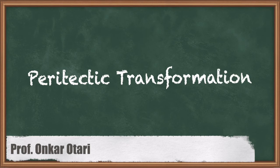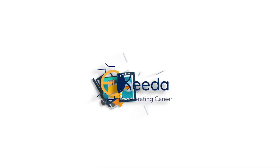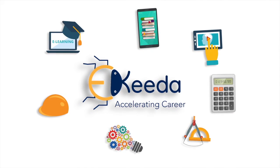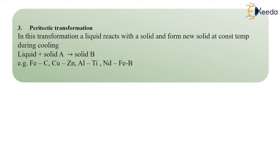Welcome students. In this video we are going to talk about peritectic transformation in a bit of detail. So what is this peritectic reaction? Here liquid reacts with one solid — liquid reacts with solid A and forms another solid, that is solid B. So what does peritectic actually mean? 'Peri' is a Greek word that means 'around.' Keep that in mind; we will come to know why it is called peritectic.